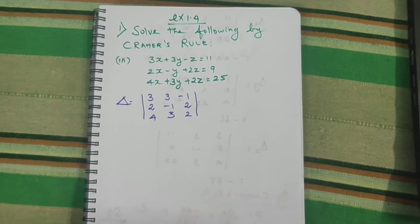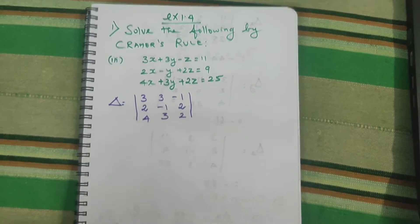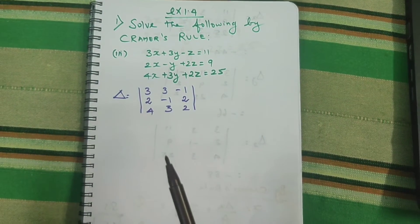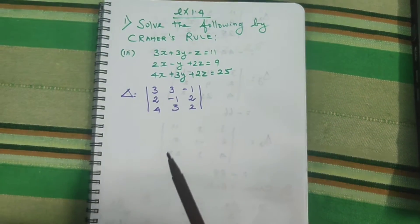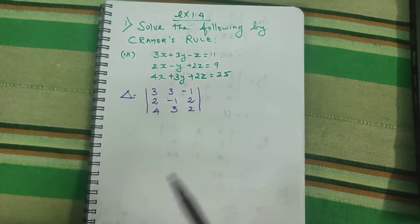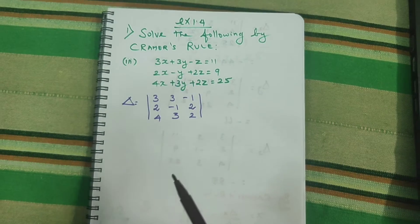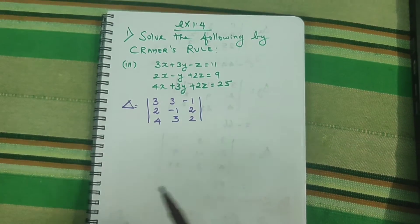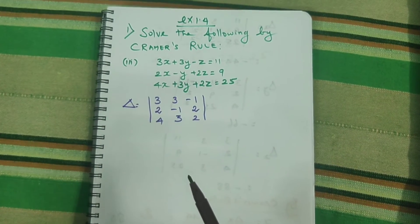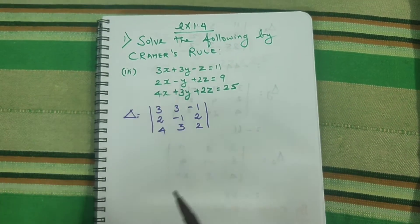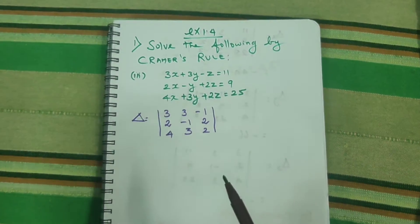How do we use Cramer's rule? How do we solve 3 equations? In 10th standard we used algebra. In 12th standard we use determinants and matrices.